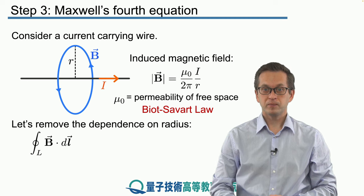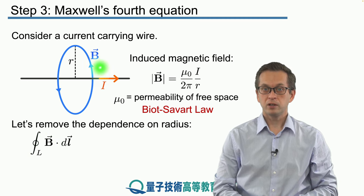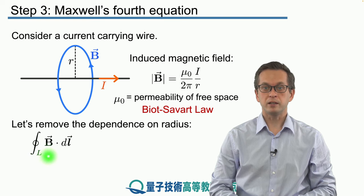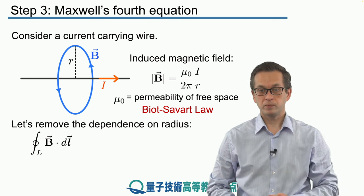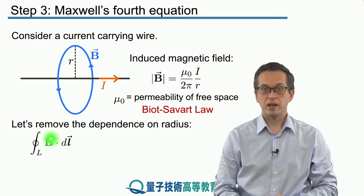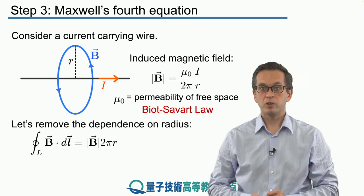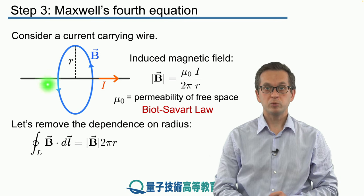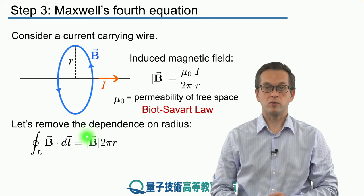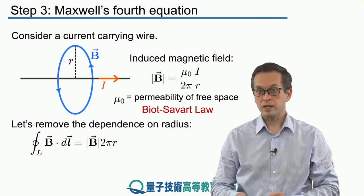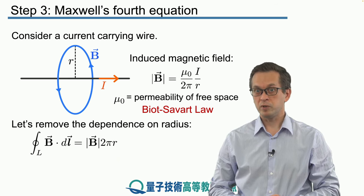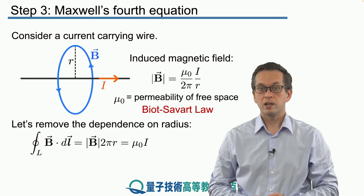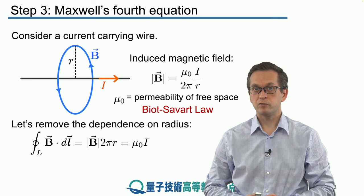We can consider the following expression — a little trick where you compute the line integral around this loop going around the current-carrying wire. You integrate all of these contributions given by the dot product of the magnetic field with the line segment of the loop. Since this line segment and the magnetic field are always pointing in the same direction — i.e. they are parallel — you just get the magnitude of the magnetic field, because everywhere on this loop the magnetic field has the same magnitude, times the circumference of the loop, which is 2πr. Now substituting from the Biot-Savart law, the 2π's cancel as well as the r. What we are left with is that this line integral is simply μ₀ times the current I.